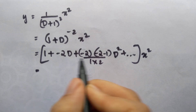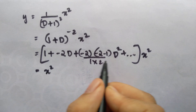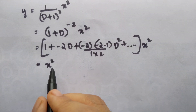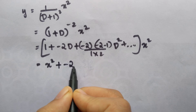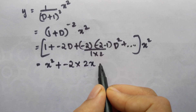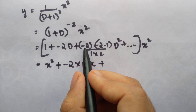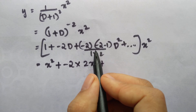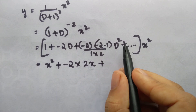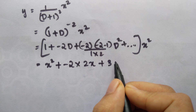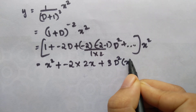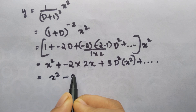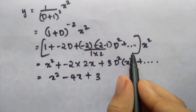Simplifying term by term: 1 into x square is x square; minus 2 times the derivative of x square gives minus 2 times 2x, which is minus 4x. For the D square term: minus 2 into minus 3 divided by 2 equals 3, so 3 times D square of x square. This gives us x square minus 4x plus 3 times the second derivative of x square.